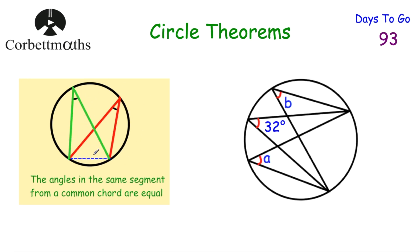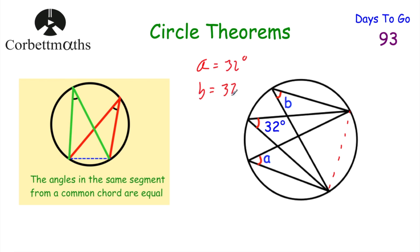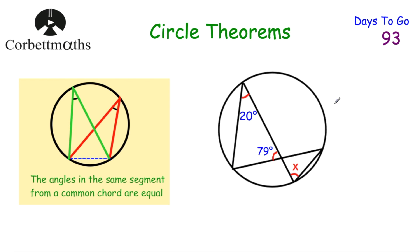Our next circle theorem: if you've got a chord and two sets of chords that come up and meet at different points on the circumference, the angles in the same segment will be equal to each other. So here, with a common chord, angle a and angle b are both in the same segment as the 32-degree angle, so a equals 32 degrees and b equals 32 degrees.